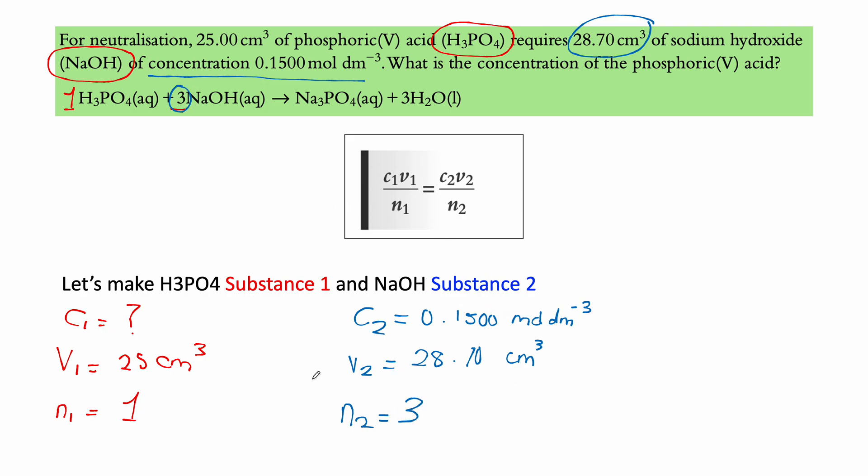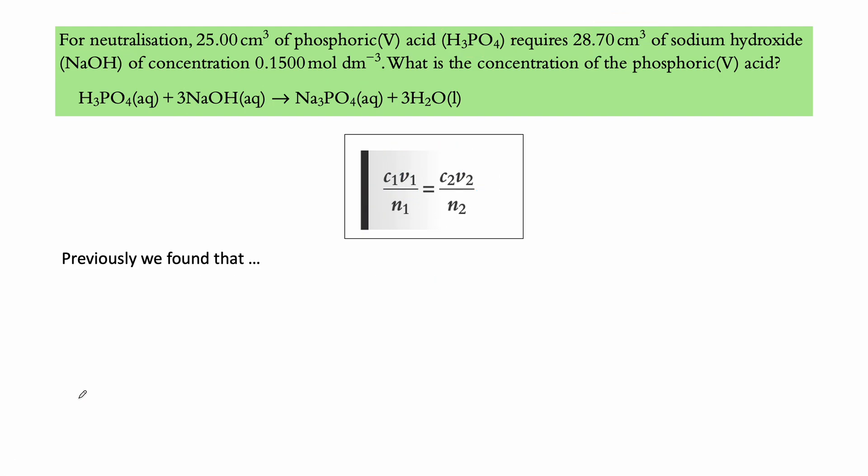All right. So we figured out all the values we need to satisfy this equation, right? We have everything. We have this, we have this, we have this, this, this. And so we can just move things around to find this. All right. So going to the next slide. Previously, we found that we have these values. And so we want to manipulate this equation such that we're solving for C1. So that's very simple. It's just basic manipulation of an equation. So we want to find C1. So how do we do this? So C1 equals to what? There is an n1 in this side. So we move n1 to the top. So that becomes C2 V2 n1. And we move V1 to the bottom. So we move V1 here. And that becomes V1 n2. So this is how we solve for C1.